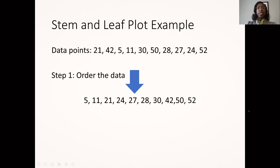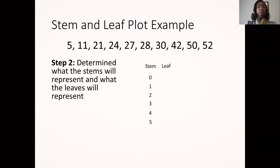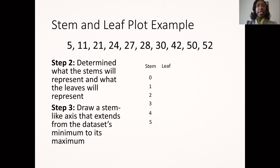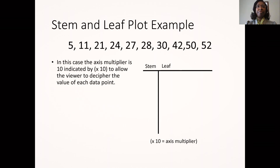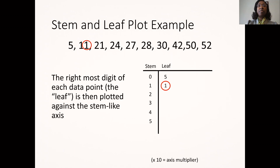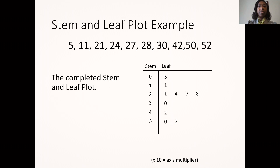One way to understand a stem and leaf plot is to create one. This example shows 10 data points to be plotted. The first step is to order the data points. The second step is to determine what the stems and leaves represent — in this example, the stems are indicated by the numbers 0 through 5. The next step is to draw a stem-like axis extending from the data set's minimum to its maximum. The axis multiplier is 10, allowing the viewer to decipher the value at each data point. The rightmost digit of each data point is then plotted against the axis until the completed plot is formed.